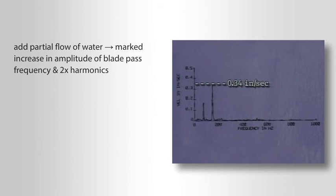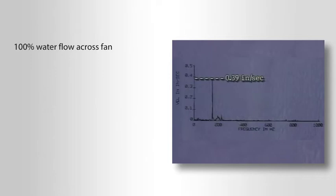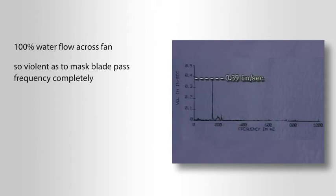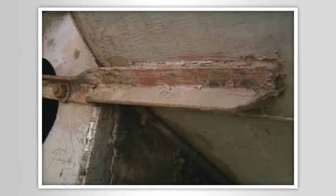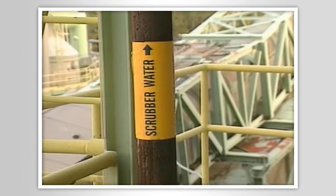When we begin to add a partial flow of water, we see a marked increase in the amplitude of both the blade pass frequency and the two-times harmonics. By the time we reach 100 percent water flow across the fan, the two-times harmonic, which now reaches above 0.3 inches per second, has become so violent as to mask the blade pass frequency completely.